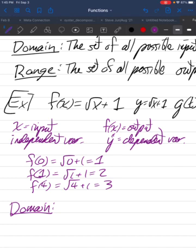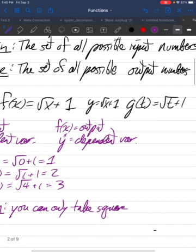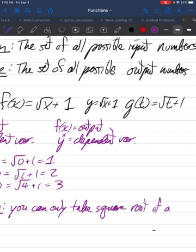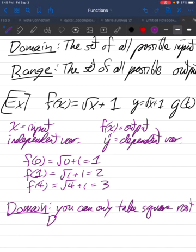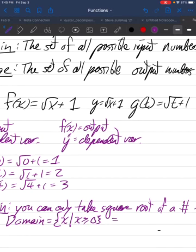What's the domain here? We'll notice you can only take square root of a number that's greater than or equal to 0, right? Negative numbers don't have square roots, so that means that the domain of this function is all real numbers x, which are greater than or equal to 0. That's a mathy way of writing it. We won't usually use that notation. We'll usually write it as an interval. So it's all the numbers from 0 to infinity. So the interval from 0 to infinity.